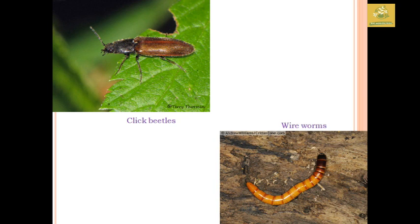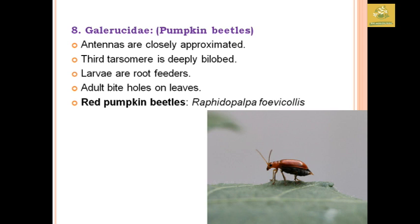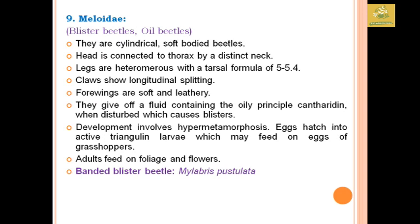Galerucidae family comprises the pumpkin beetle. The antennae are closely approximated, and the third tarsomere is deeply bilobed. Larvae are root feeders and adults bite holes in leaves. An example is the red pumpkin beetle, Raphidopalpa foveicollis.